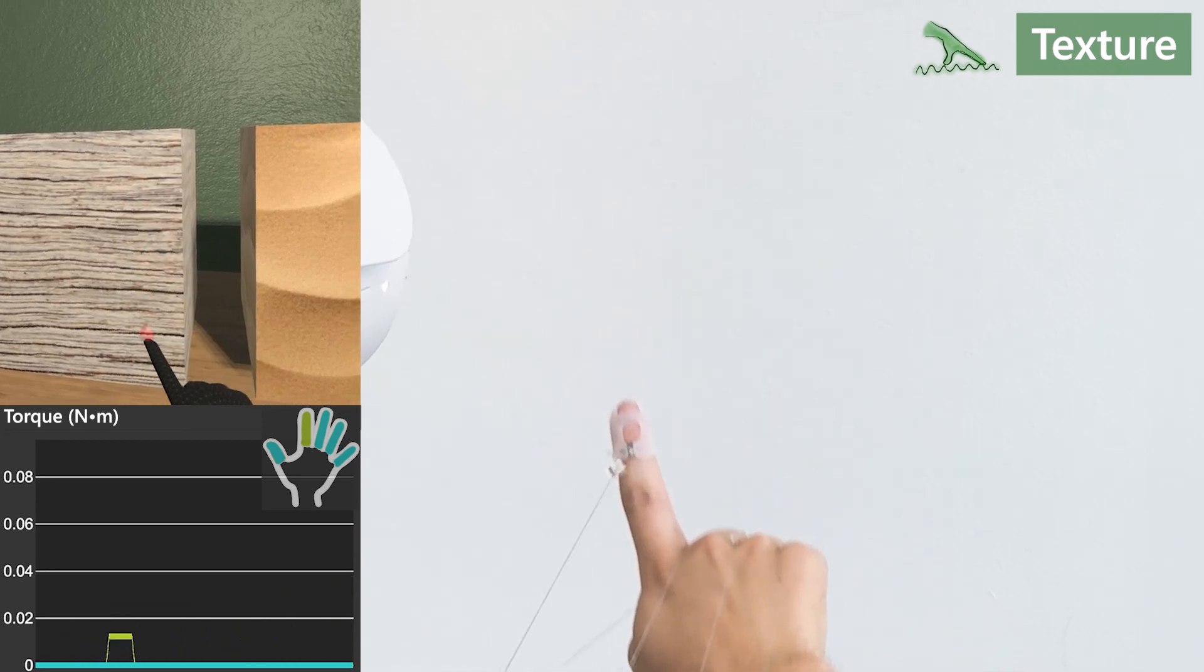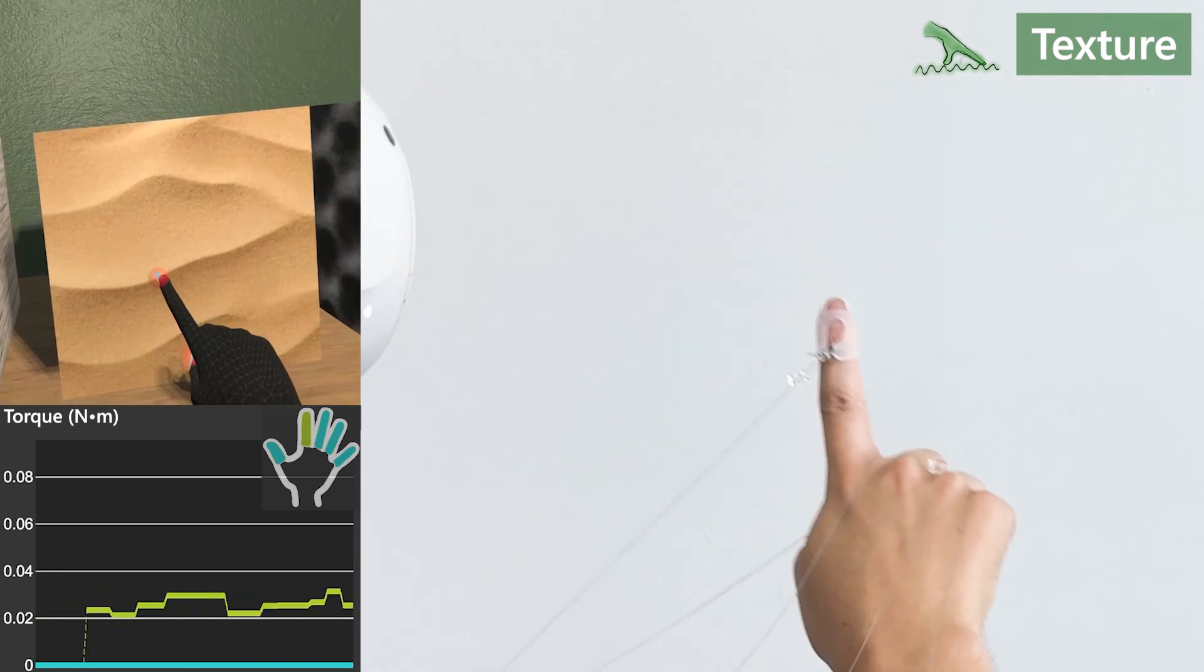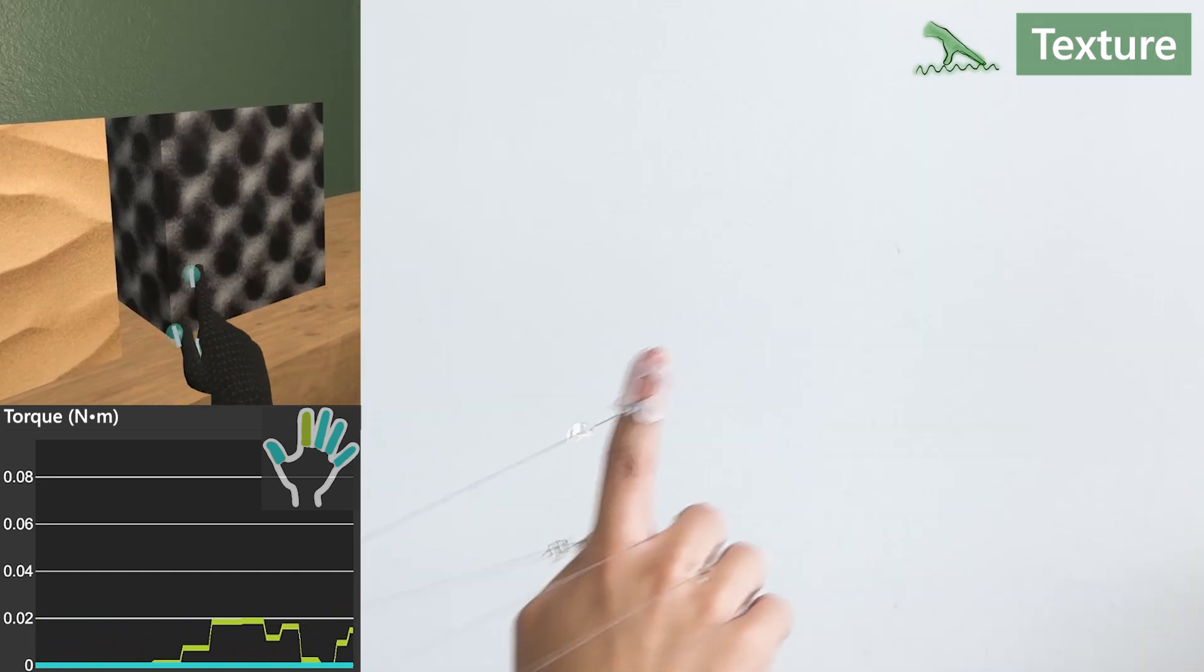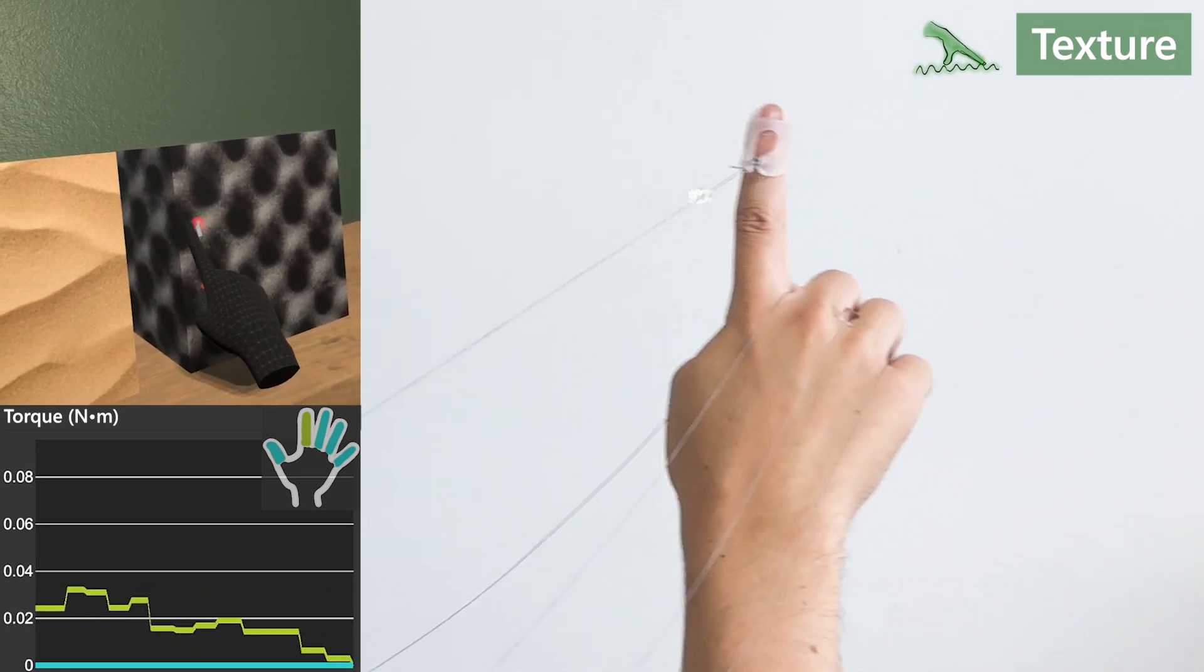Finally, by tracking the user's hand, we can enable objects with spatial textures. Here we show examples of wood grain, sand, and foam surfaces.